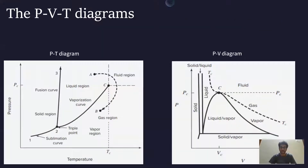The PVT diagrams: in order to study the PVT behavior of fluids, we can make use of two diagrams — the pressure-temperature diagram and the pressure-volume diagram. The main difference between the two is that the two-phase region is shown as a curve in the pressure-temperature diagram, whereas it is shown as an area under the curve in the pressure-volume diagram. For example, the vapor-liquid equilibrium is shown by the curve joining point two to point C in the PT diagram, whereas in the PV diagram the same vapor-liquid equilibrium region is shown as the area under the dome, as shown here.